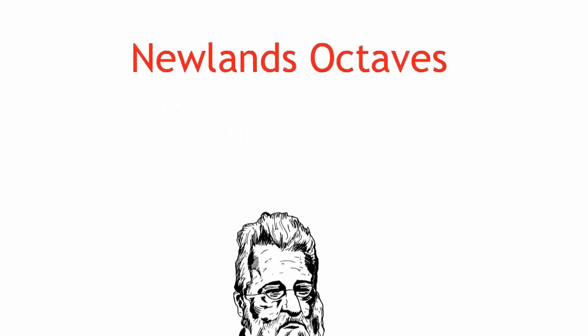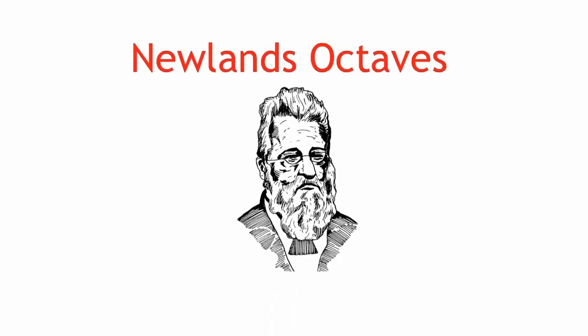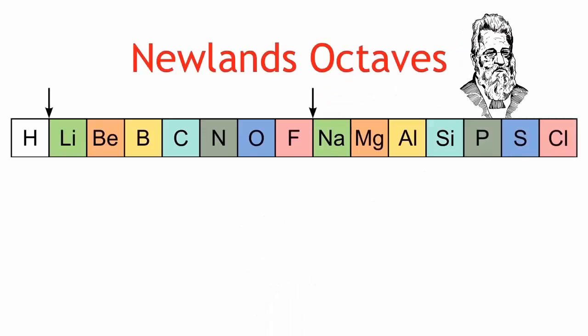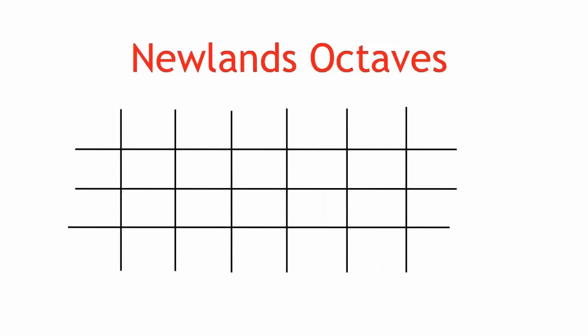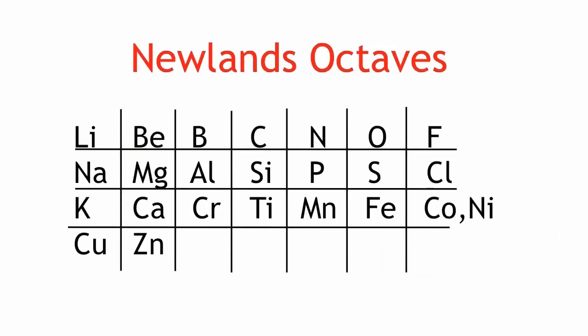Fifty years later came Newland's octaves. Newland noticed that when the elements are arranged in order of their atomic weight, every eighth element had similar properties. So he listed some of the known elements in rows of seven. His pattern only worked up to a certain point. It broke down on the third row.